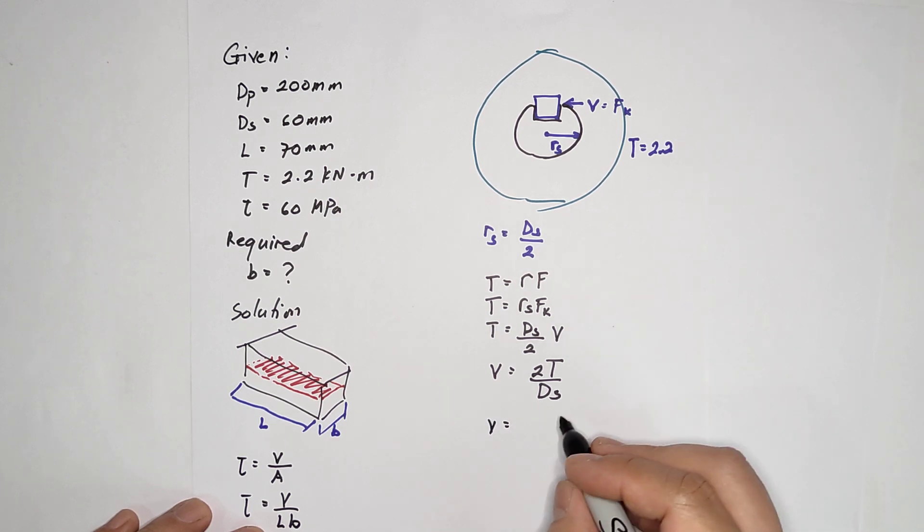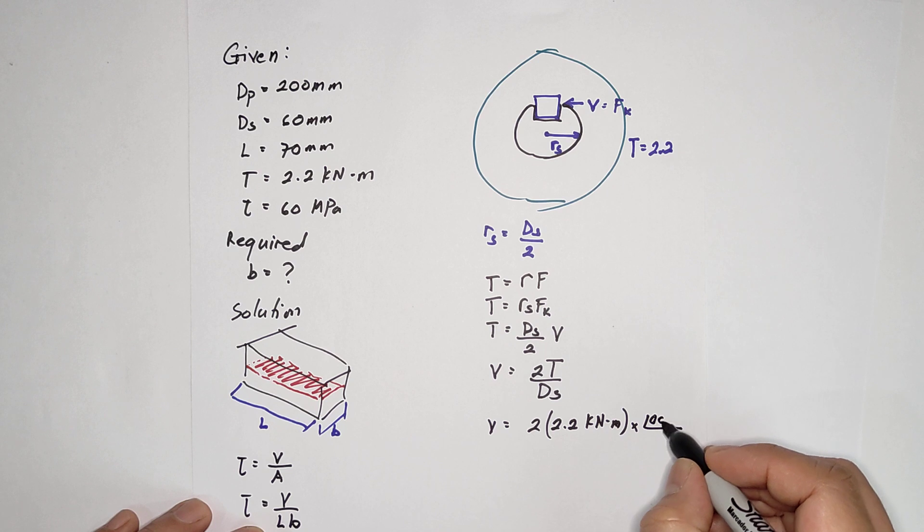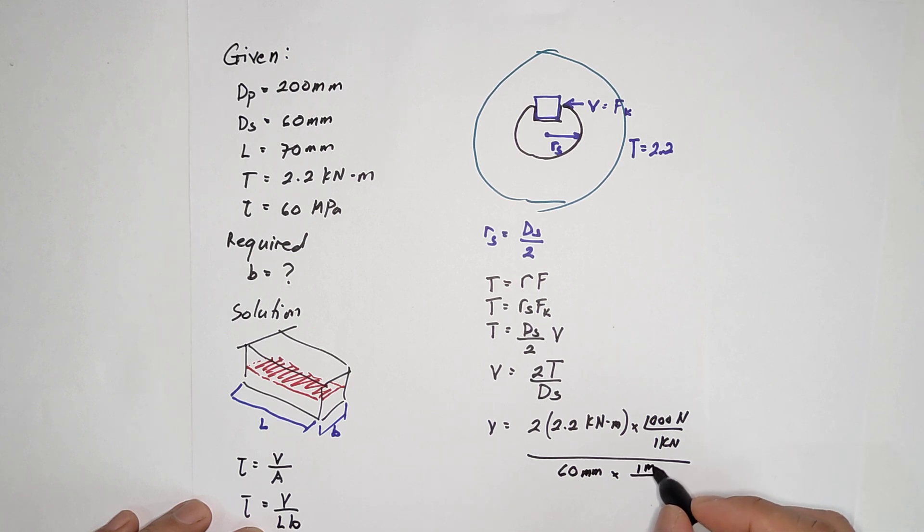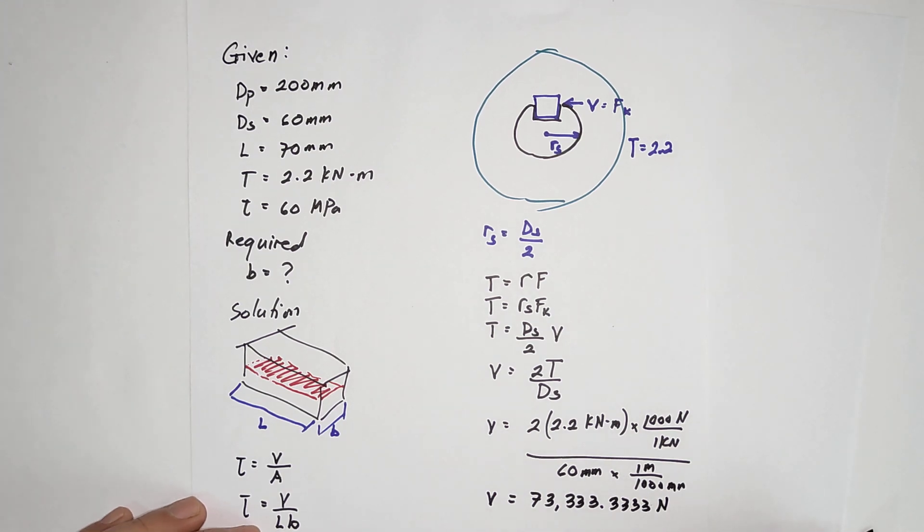So the shear force now would be 2 times 2.2 kilonewton meter, actually we have to convert that, that is 1000 newton in 1 kilonewton, and this one is divided by the DS. The DS is 60 mm and convert that into meter, it will become 1 meter is 1000 mm. The shear force in this case is actually 73333.3333, I usually have 4 decimal places. So that's the shear force.